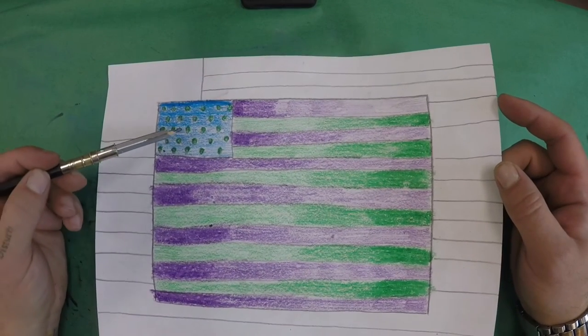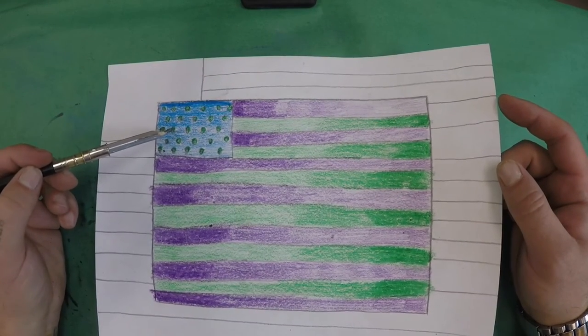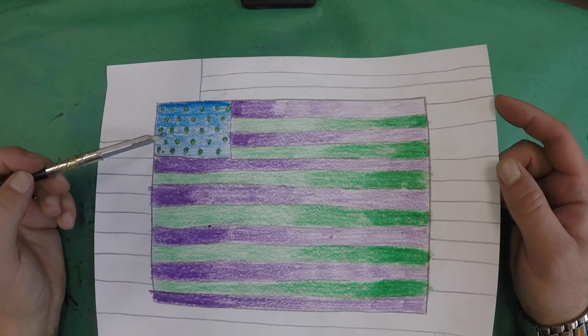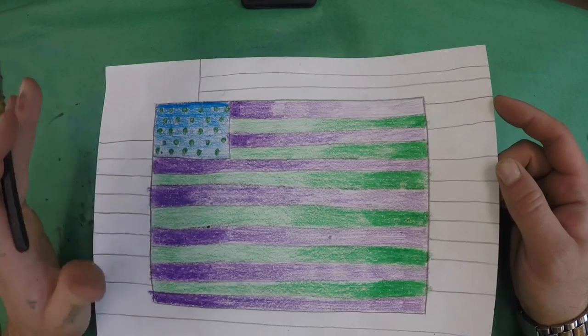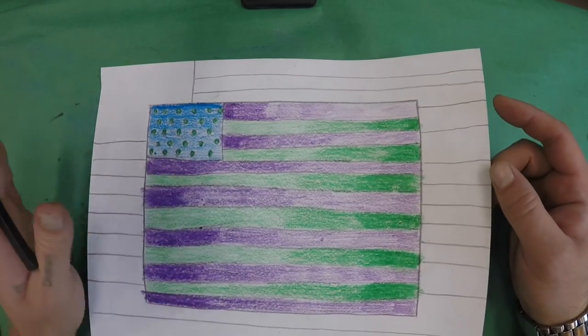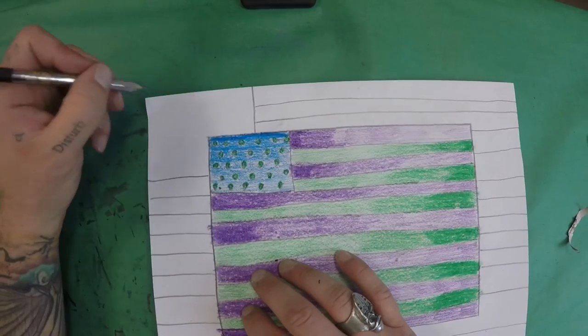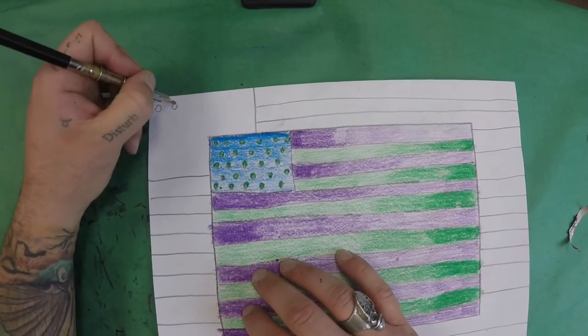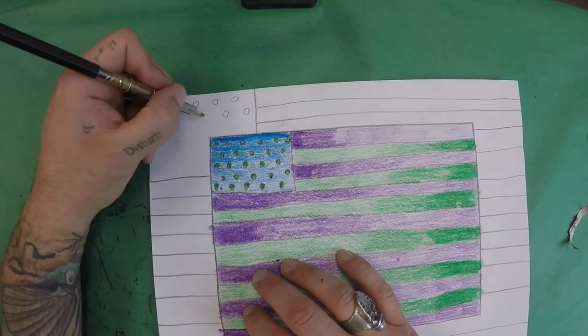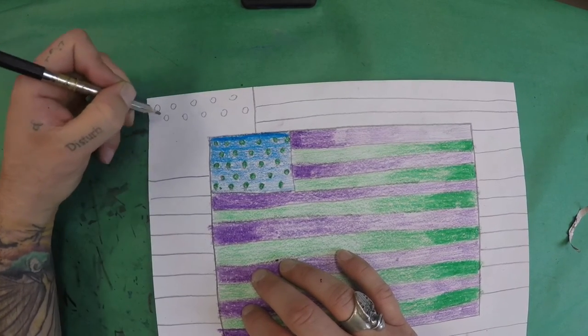Just saying, when you do the stars here, don't worry about trying to put these three layers of values on those stars. Those shapes are going to be way too small to do that. It's totally fine to do what I did, which is just go in and put a dark value on all of them. Come back into this field. Same thing. We're going to create our stars.